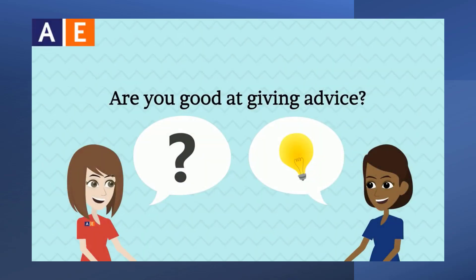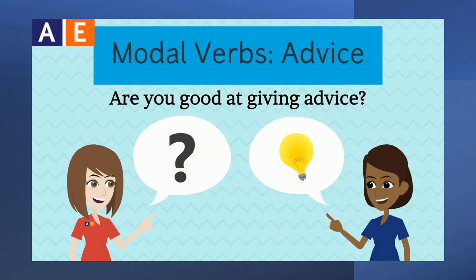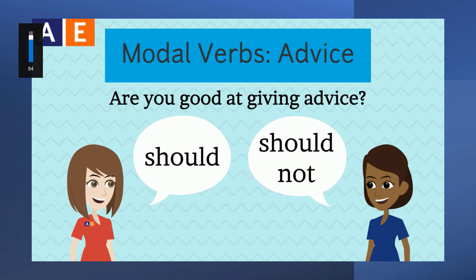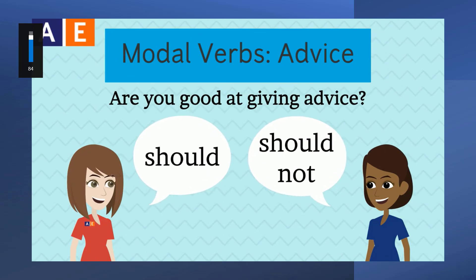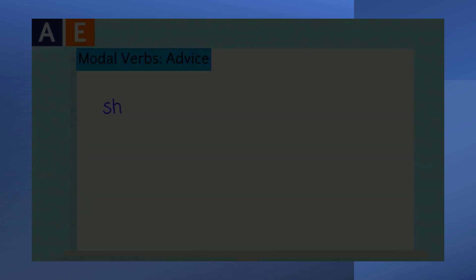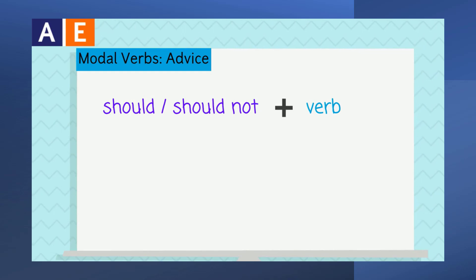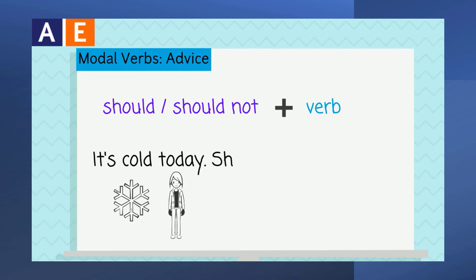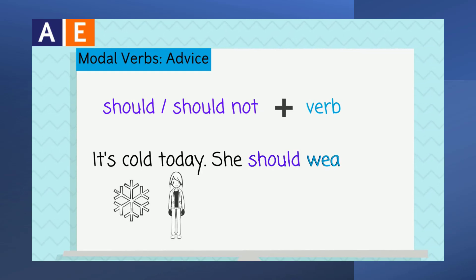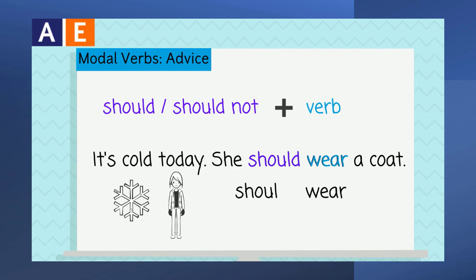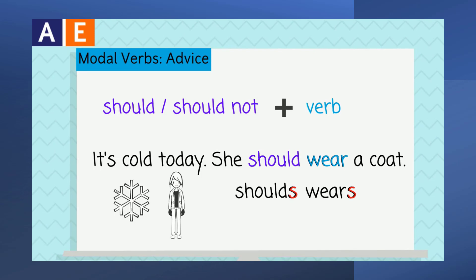Are you good at giving advice? Learn how to use the modal verbs 'should' and 'should not' to give advice. Modal verbs are directly followed by another verb, and they don't change form. For example: 'It's cold today, she should wear a coat.' Notice that 'should' and 'wear' do not take the third person singular 's'.